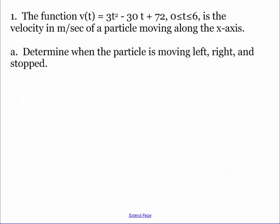So let's do some examples involving this. The function v(t) = 3t² - 30t + 72, 0≤t≤6, is our velocity function, and notice how I give us units, is a particle moving along the x-axis. Determine when the particle is moving left, right, or stopped. Remember left is when velocity is less than zero, right is when velocity is greater than zero, and stopped is when velocity equals zero.